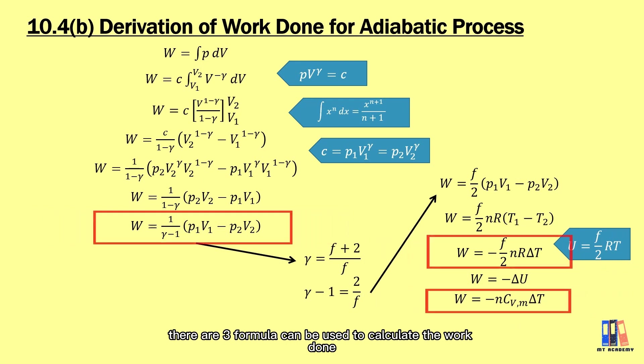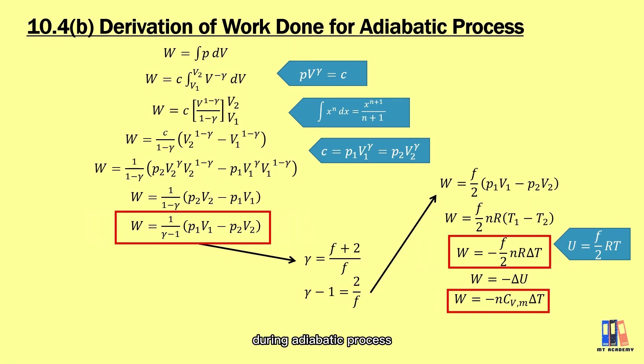Overall, there are three formulas can be used to calculate the work done during adiabatic process, depending on what are the variables given in the question, such as gamma, degree of freedom or the molar heat capacity.